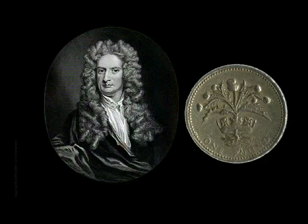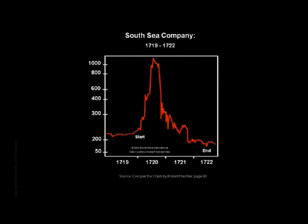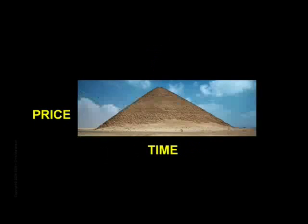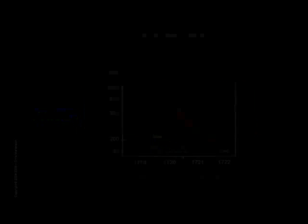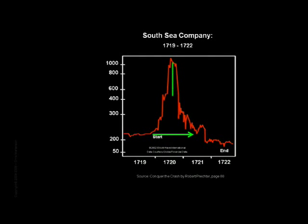In 1720, the South Sea Mania took off, displaying a textbook perfect example of an asset bubble. Here we see reflected two additional essential features of bubbles: however long it took to create the bubble is roughly the amount of time it will take to unwind the bubble, and prices usually get fully retraced, if not a bit more. Here we can see those features in perfect form. Keep an eye on this shape — we'll be seeing it again and again.